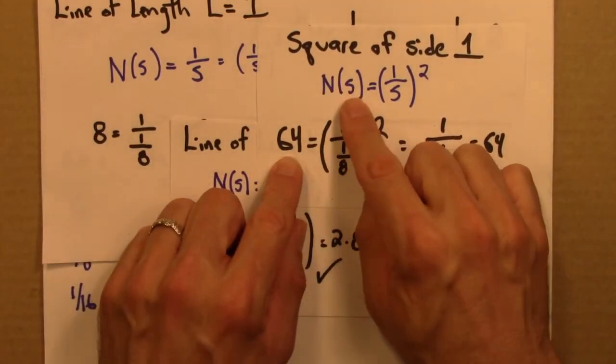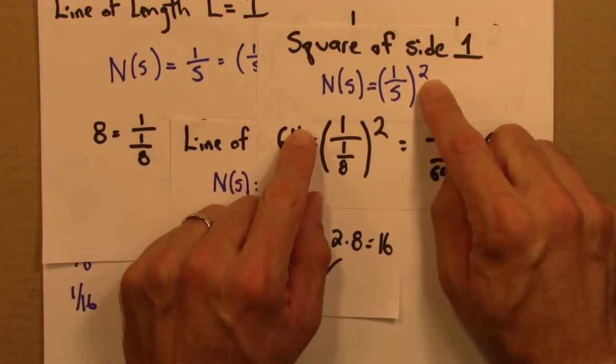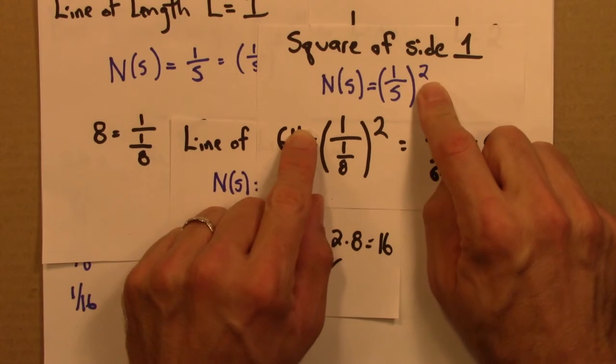And for the square, which was two-dimensional, we have (1/s) raised to the second power. So the dimension, as before, is up here in the exponent.